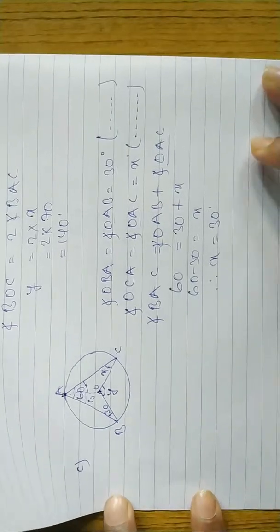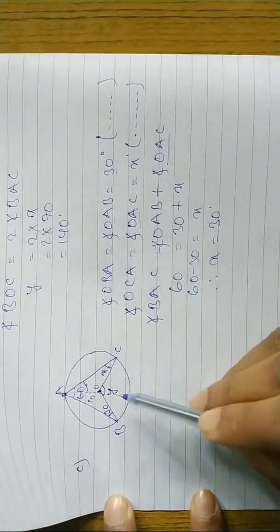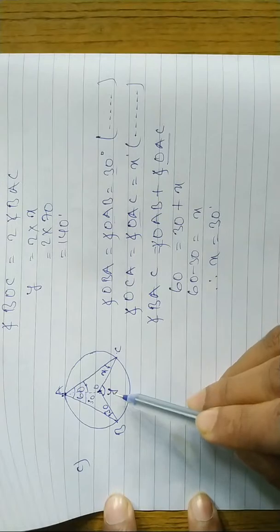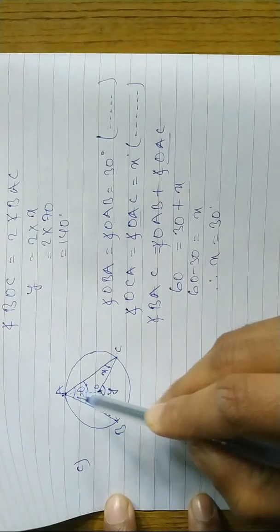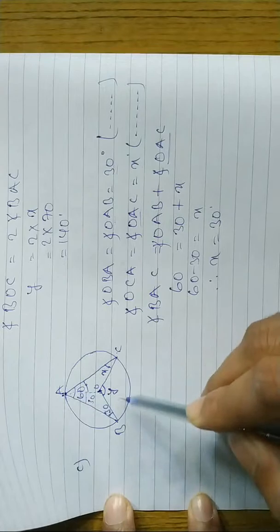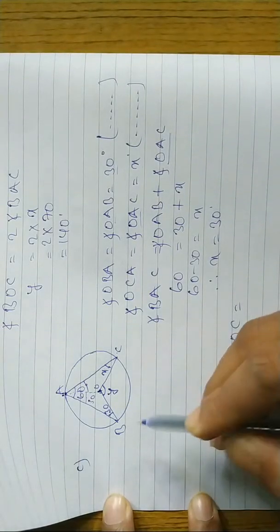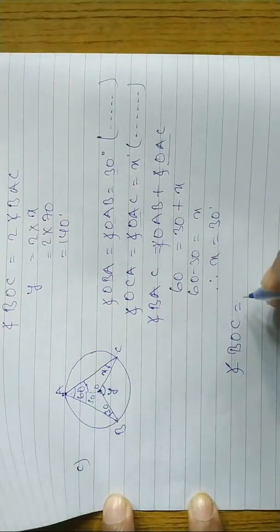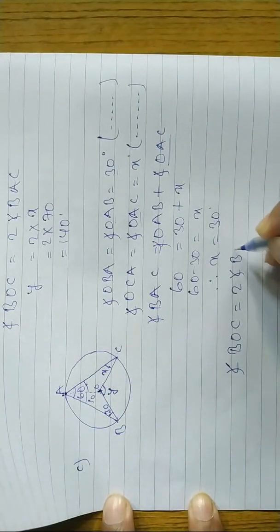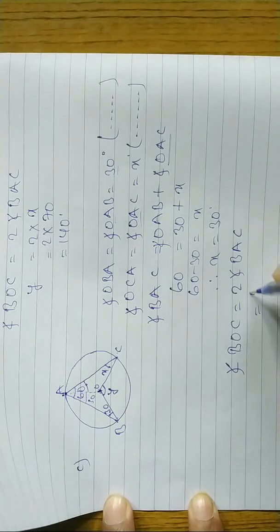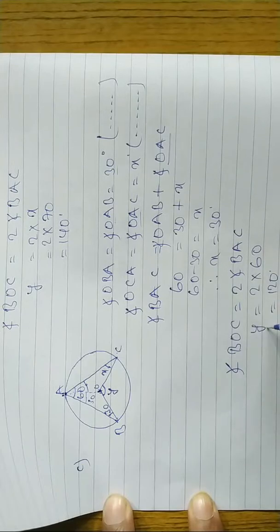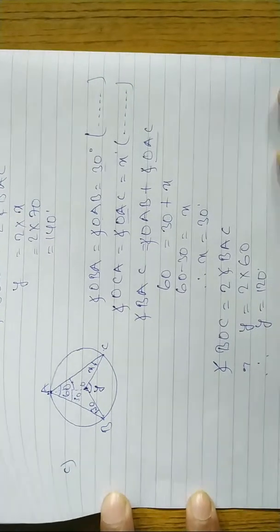Now to find y: y is the central angle and BAC is the inscribed angle. The central angle is double the inscribed angle, so angle BOC equals 2 times angle BAC equals 2 times 60 equals 120 degrees. Therefore y equals 120 degrees.